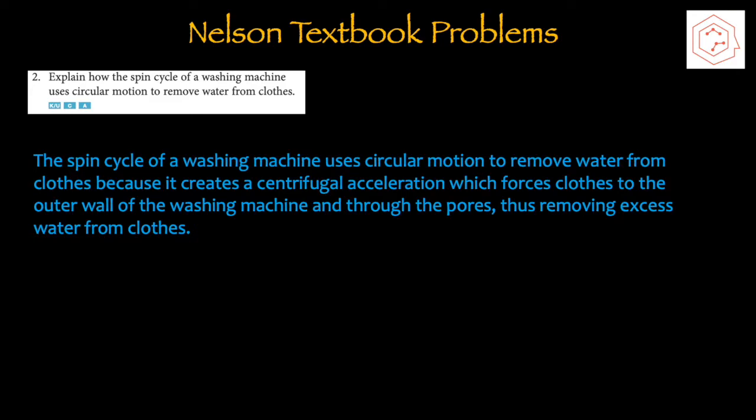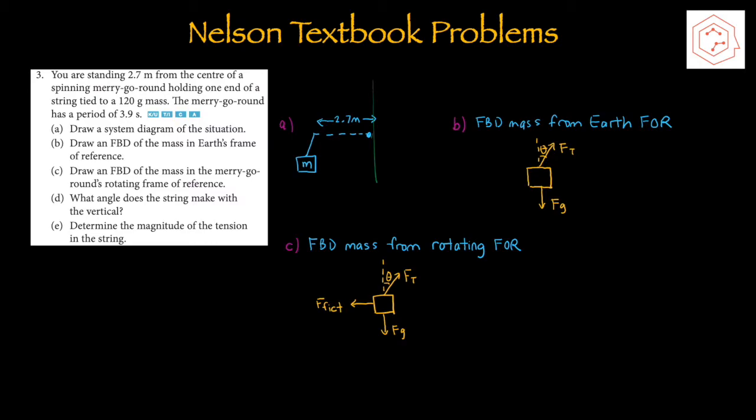Question 2: Explain how the spin cycle of a washing machine uses circular motion to remove water from clothes. The spin cycle creates a centrifugal acceleration, which forces the clothes to the outer wall of the washing machine and through the pores, thus removing excess water from the clothes. This is observed from the rotating frame of reference.